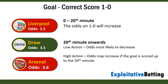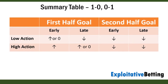With low action matches, the odds will decrease for 1-0 if the goal is scored around the 20th minute or later. In this case, the market will be expecting the leading side to defend their lead, while the trailing side will try to equalise. As such, the next scoreline of 1-0 is more likely than 2-0. Here's a summary table of the effects of the first goal on the odds of 1-0.